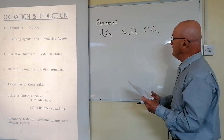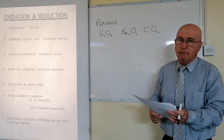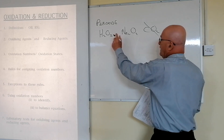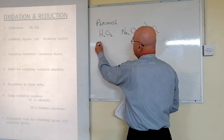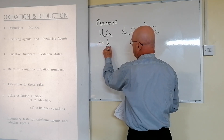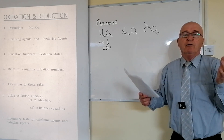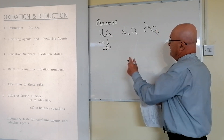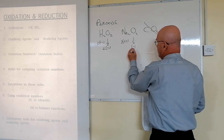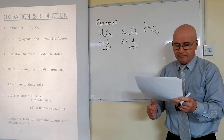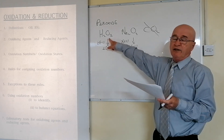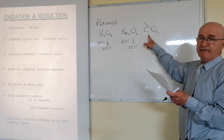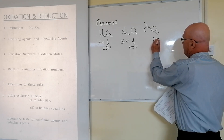If you apply the rules, you'd still get peroxides right. Our rule is: oxygen is always minus two except for peroxides. For example, in H₂O₂, hydrogen is plus one twice, therefore oxygen would have to be minus one twice. In peroxides, oxygen is minus one. Hydrogen peroxide is used to produce oxygen gas in the lab, and that's a prominent example.